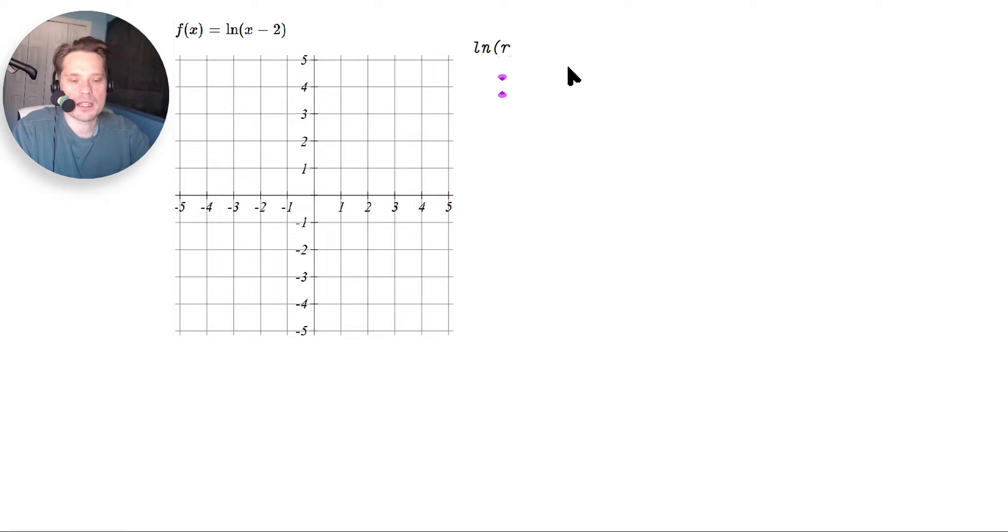So whenever we have ln of some expression, then the condition is that the expression must be greater than 0. Do not use greater than or equal to. Not correct. Because that contains the equality part. It's like saying it could be 0, but it can't.